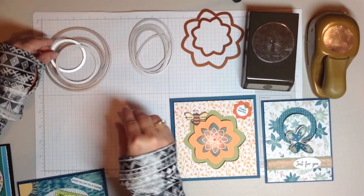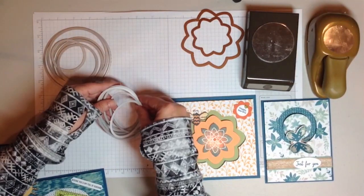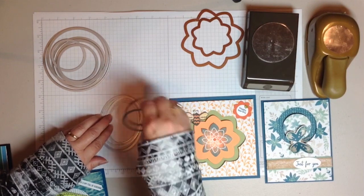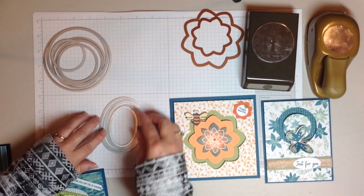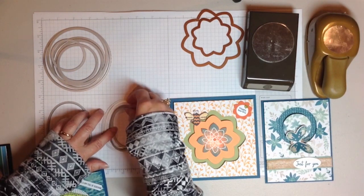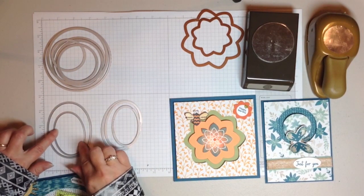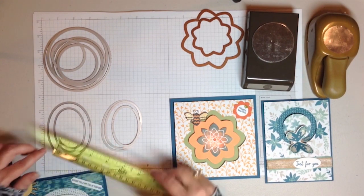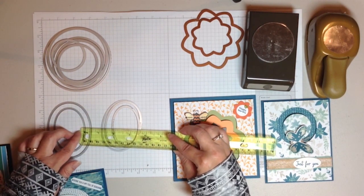Now this set right here is a little bit more tightly nested. So what I found with this set was that I needed to actually skip two. So this die, skip two, go to the next size down, lay those out concentrically and measure that and those will work.